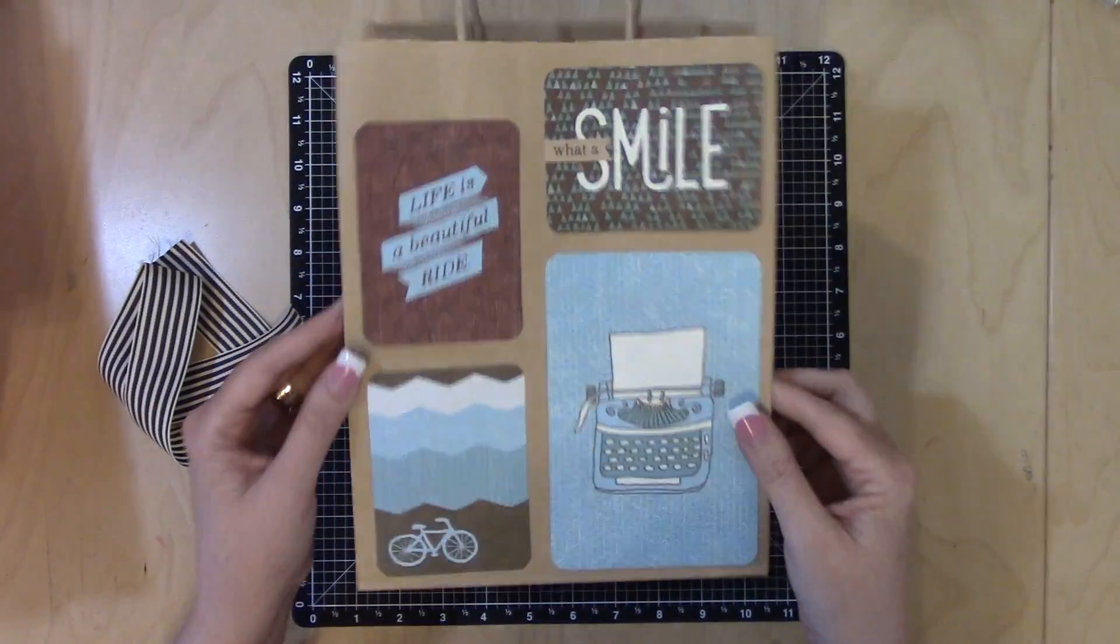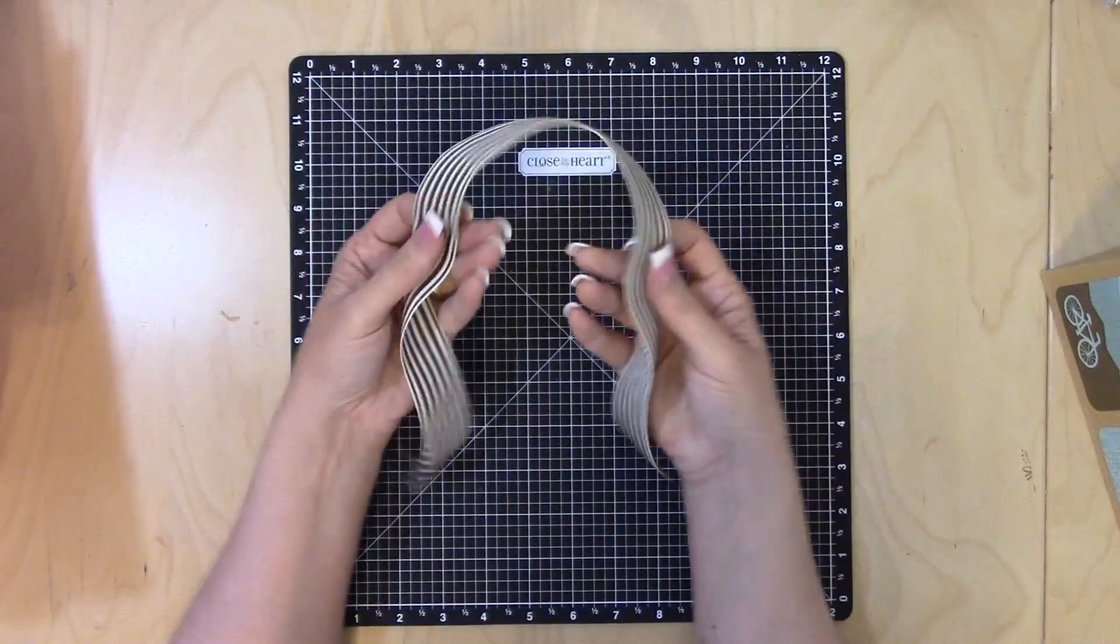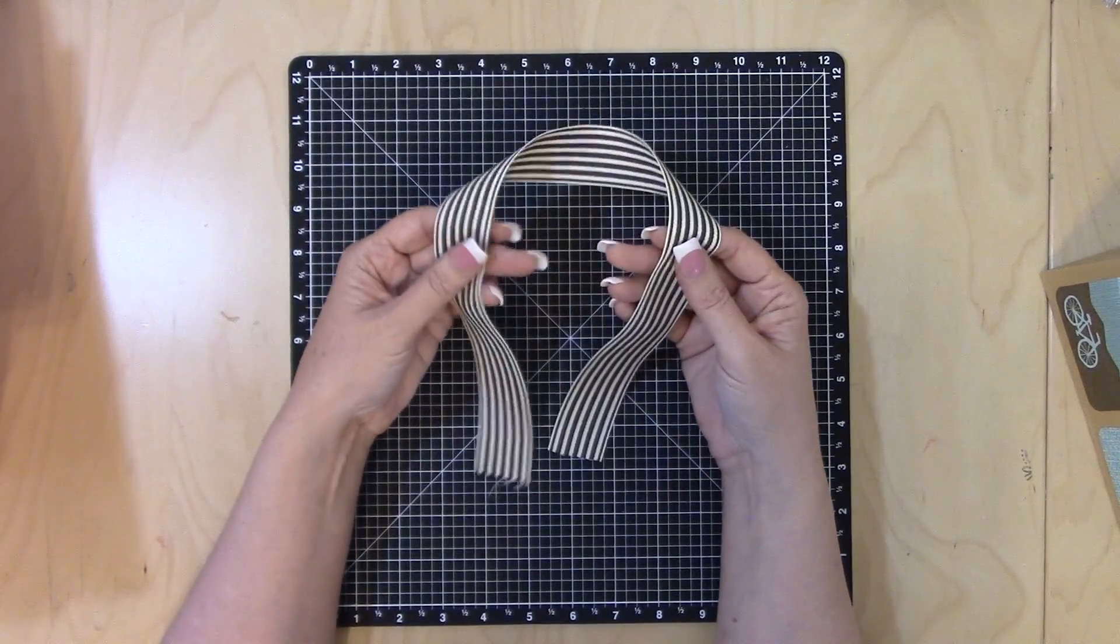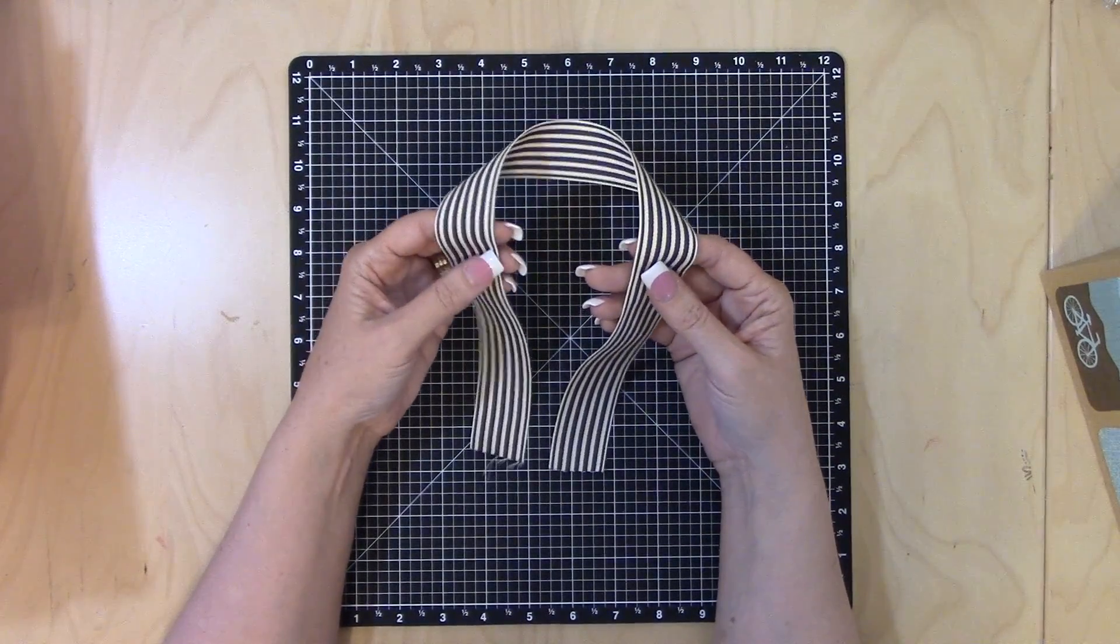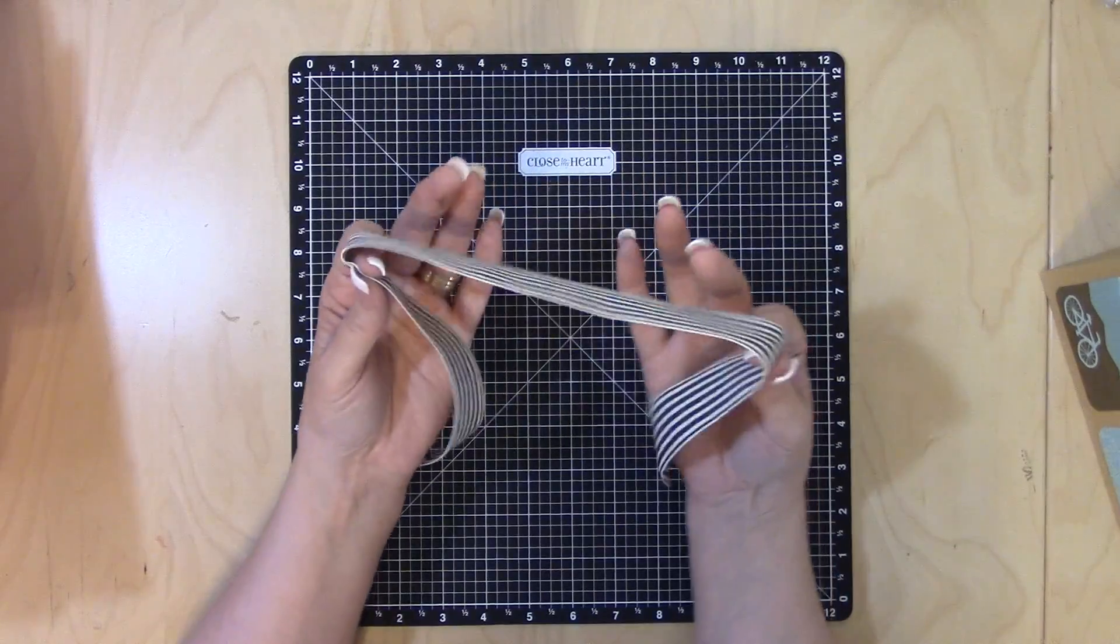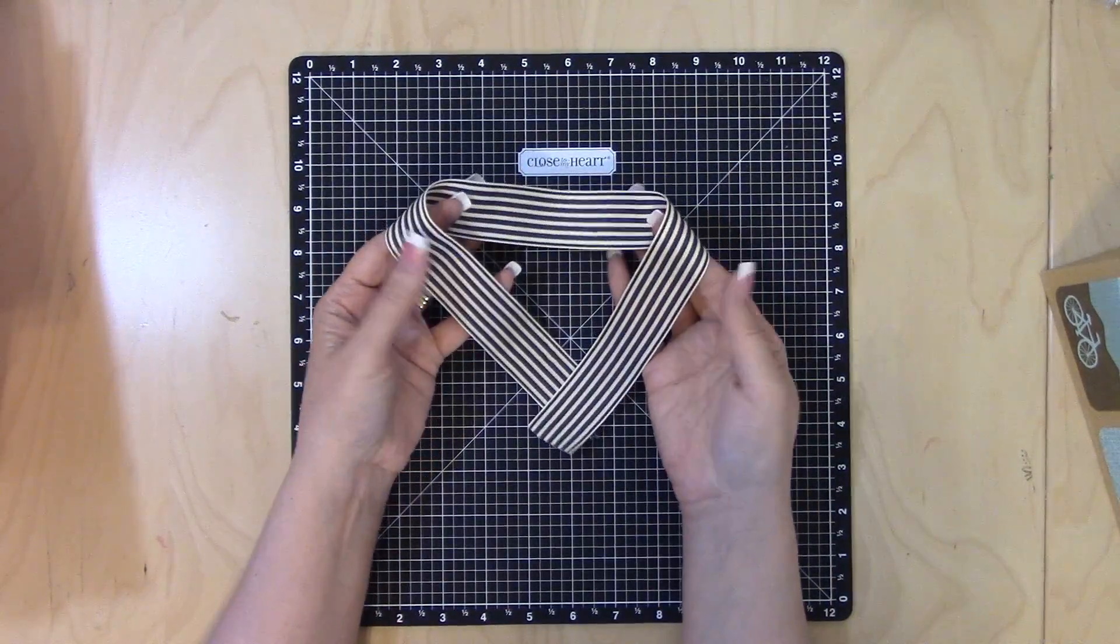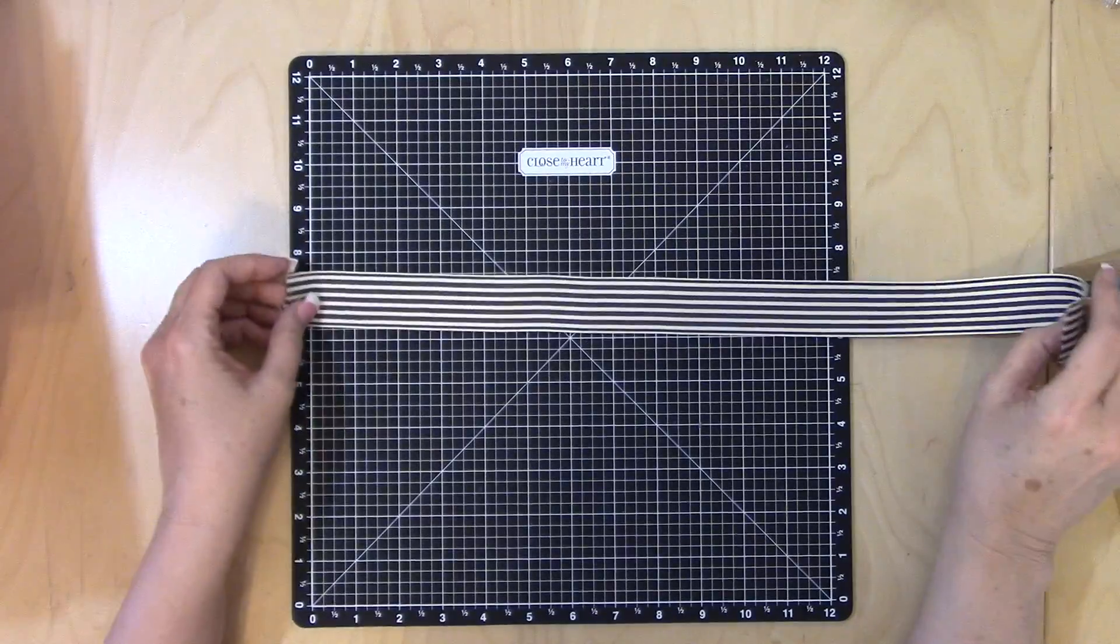Now somebody asked me how I tied a bow. I've shown you guys the Bow Easy tool before, but there's another way to do it if you don't have one. I've got my ribbon here, about 16 or 17 inches, and all I'm going to do first—I'm sure you guys have